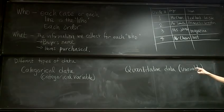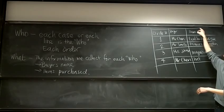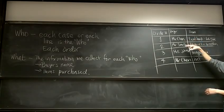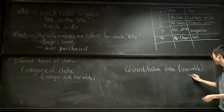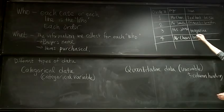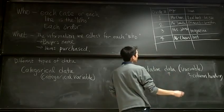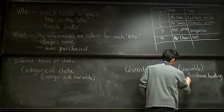Technically, the difference between the variable and the data: the variable would be like the column heading in your table, and the data is the actual information that you collected. So the variable can be thought of as the column heading — things like the buyer, the item that they purchased. The data is the actual lines or information.